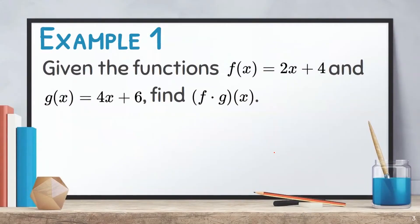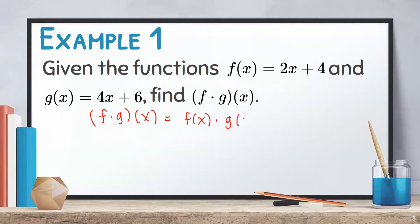Let us have an example. Given the functions f of x equals 2x plus 4 and g of x equals 4x plus 6, find f times g of x. To solve for f times g of x, we have to multiply the two given functions f of x times g of x. We substitute the given f of x and g of x to our formula, giving us 2x plus 4 times 4x plus 6.